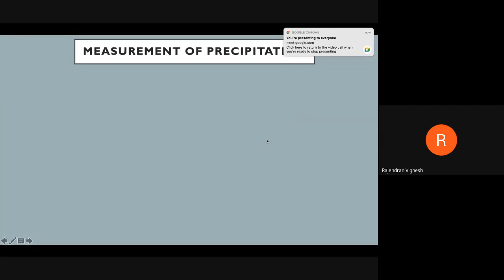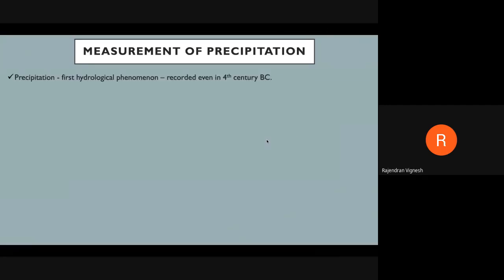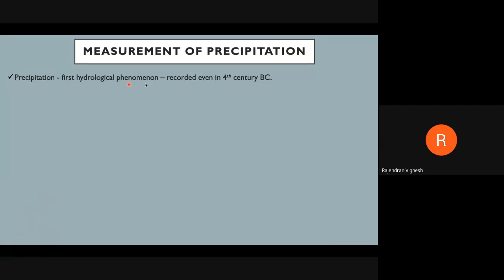Hydrological concepts and hydrological processes — these are the oldest things which we recorded, even in the fourth century. This we have already seen in the last class. Just we will see what are the things available here, and how do you measure that particular type of precipitation or rainfall.